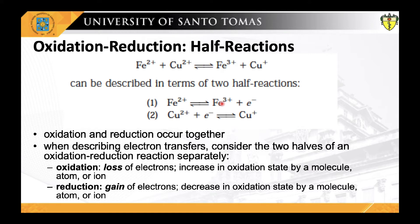Reduction is defined as a gain of electrons. With the gain of electrons, cupric (Cu²⁺) will have a decrease in oxidation state and become cuprous (Cu⁺), because the copper ion has gained an electron and its charge decreases from +2 to +1.